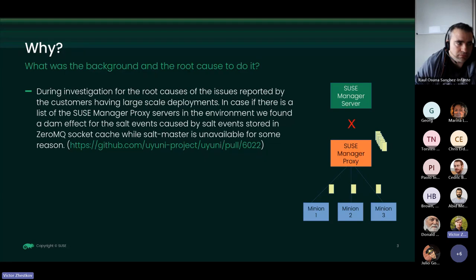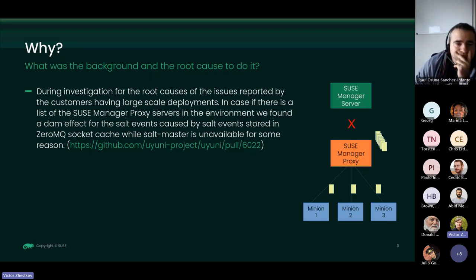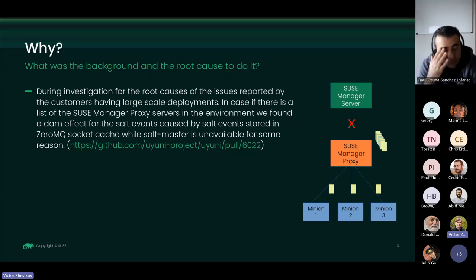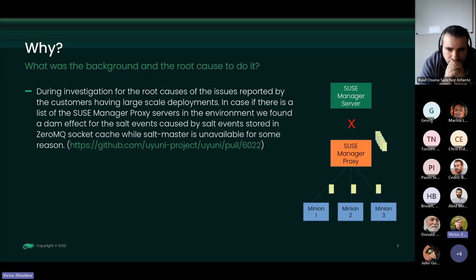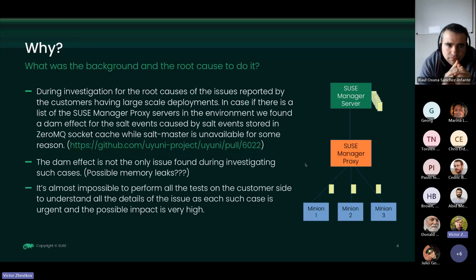This becomes critical when you have thousands of minions and potentially hundreds of proxies. If the Salt master service stops for a while and then restarts, it can be killed immediately by the collected Salt authentication messages from the minions, which are repeated by the minions, collected by the Salt broker, and then pushed all at once to the master. This is called the 'dam effect.' You can notice huge memory consumption in one of the Salt master sub-processes.